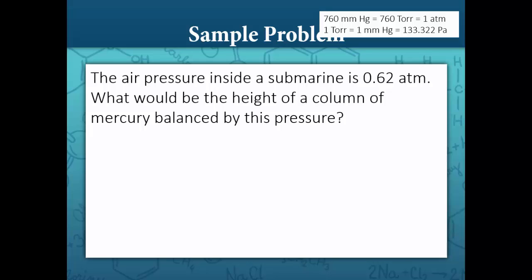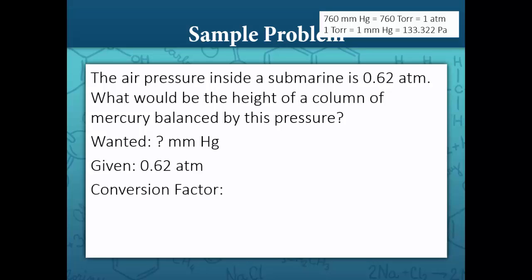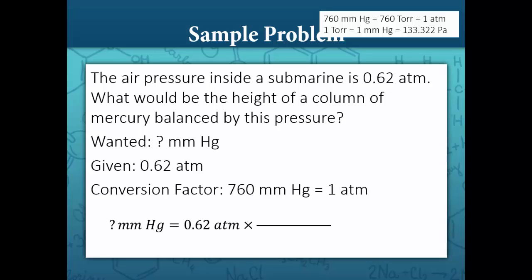Another sample problem. The air pressure inside a submarine is 0.62 atmospheres. What would be the height of a column of mercury balanced by this pressure? When they ask about the height of a column of mercury, they want millimeters mercury. We convert from atmospheres to millimeters mercury using 760 millimeters mercury equals 1 atmosphere. Setting up the problem: question mark millimeters mercury equals 0.62 atmospheres, giving us 470 millimeters mercury.